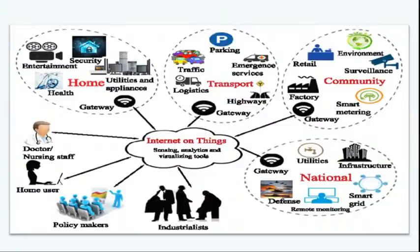In the transport area, we can use IoT for parking, emergency services, traffic, logistics, and highways. In industries and communities, you can use it for surveillance cameras, factory purposes, smart metering, and infrastructure development. Also, remote monitoring, smart grid, and cloud storage — we can use IoT in all these areas. Apart from this, we have WBAN — Wireless Body Area Network.